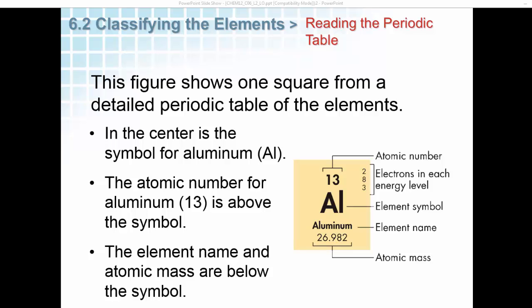This figure shows one square from a detailed periodic table of the elements. In the center is the symbol for aluminum, Al. The atomic number for aluminum, 13, is above the symbol. The element's name and atomic mass are below the symbol.